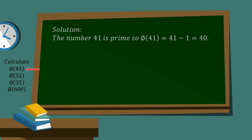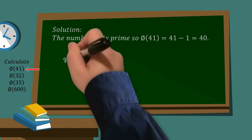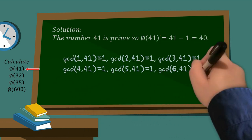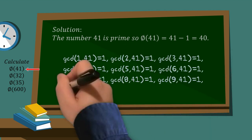So, solution. The number 41 is prime, so phi of 41 is equal to 41 minus 1, which is equal to 40. And you can probably see why that is. 41 is prime, it only has two divisors, 1 and 41 itself. So every number between 1 and 40 has a GCD of 1 with the number 41.